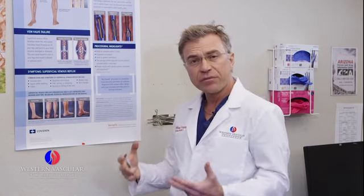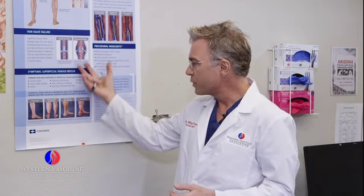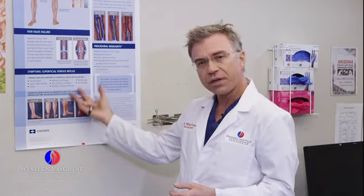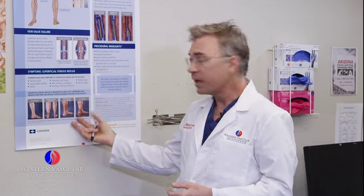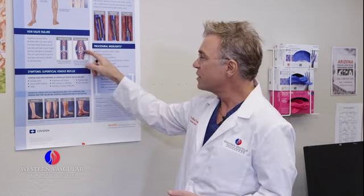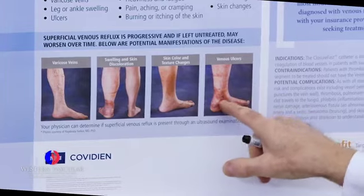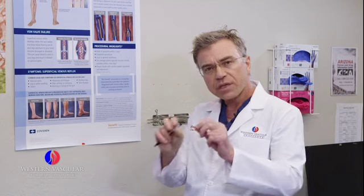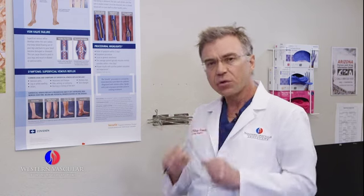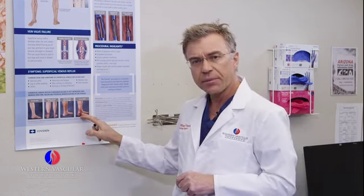Sometimes you can get what we call venous ulcerations or wounds around the ankles. That's when there's so much gravitational force and pressure on the leg veins — due to these stretched-out veins where blood is pooling all the way down to the ankle — causing erosions of these veins through the skin and leading to a wound, and sometimes these can take quite a long time to heal up.